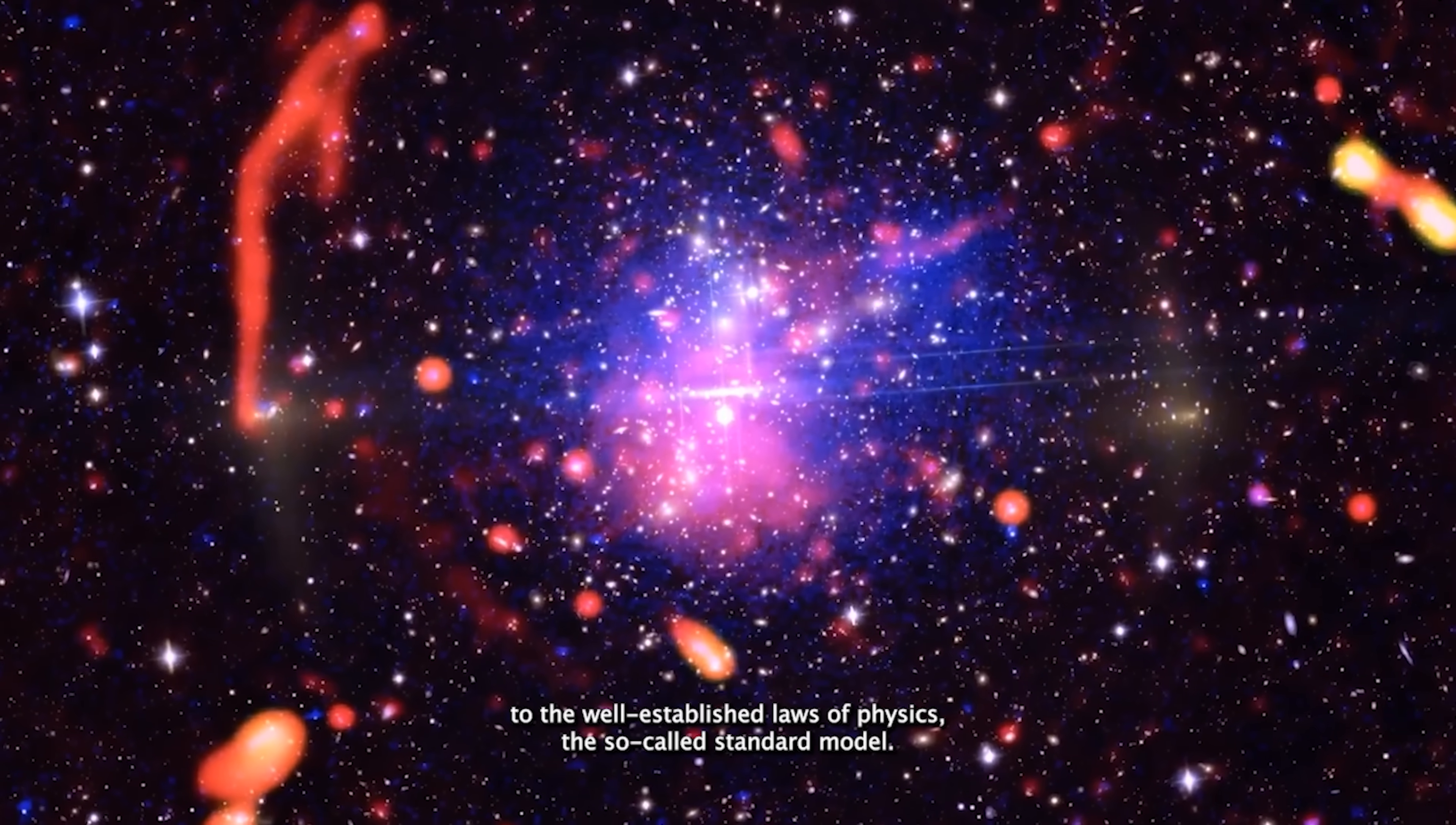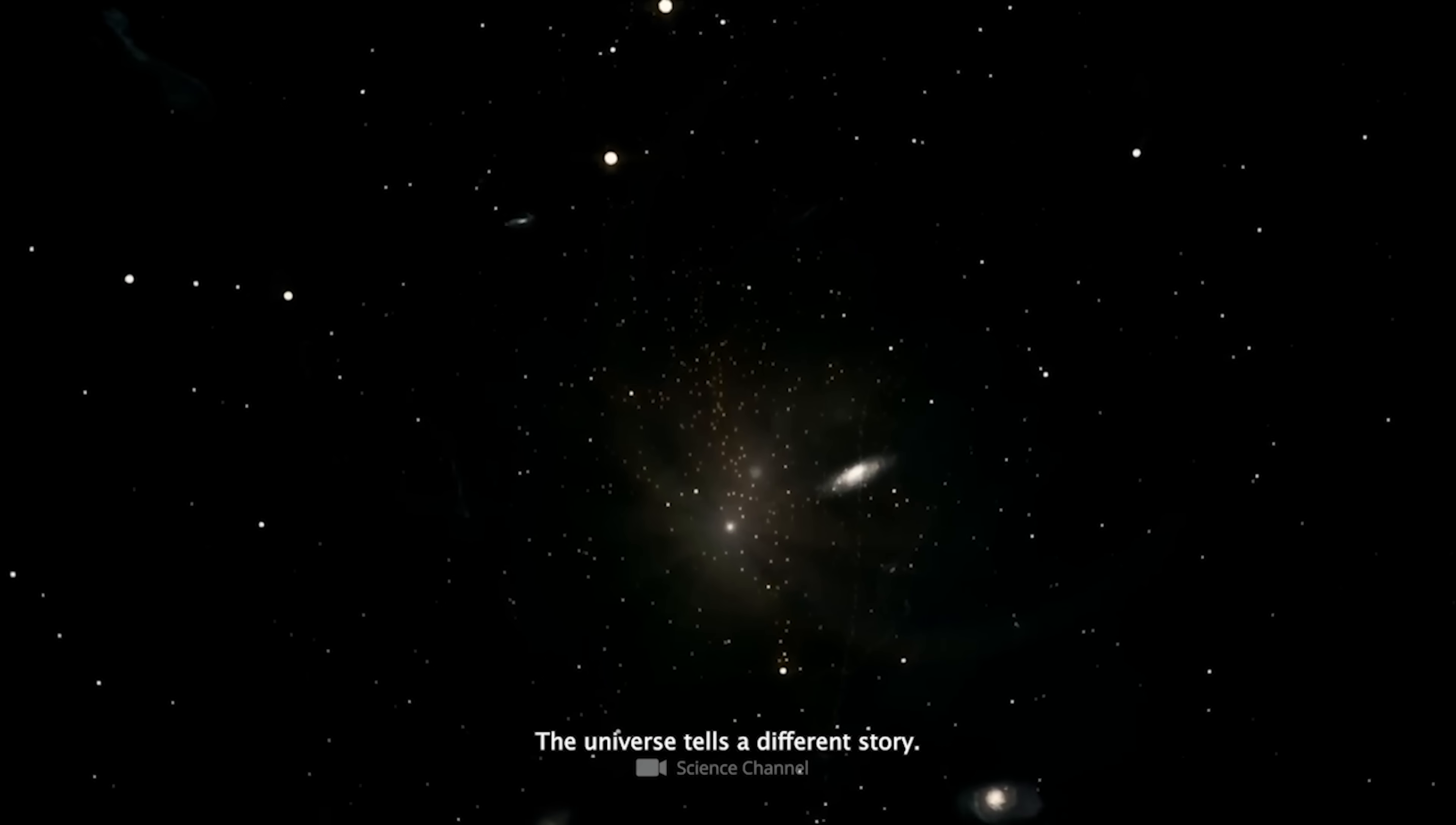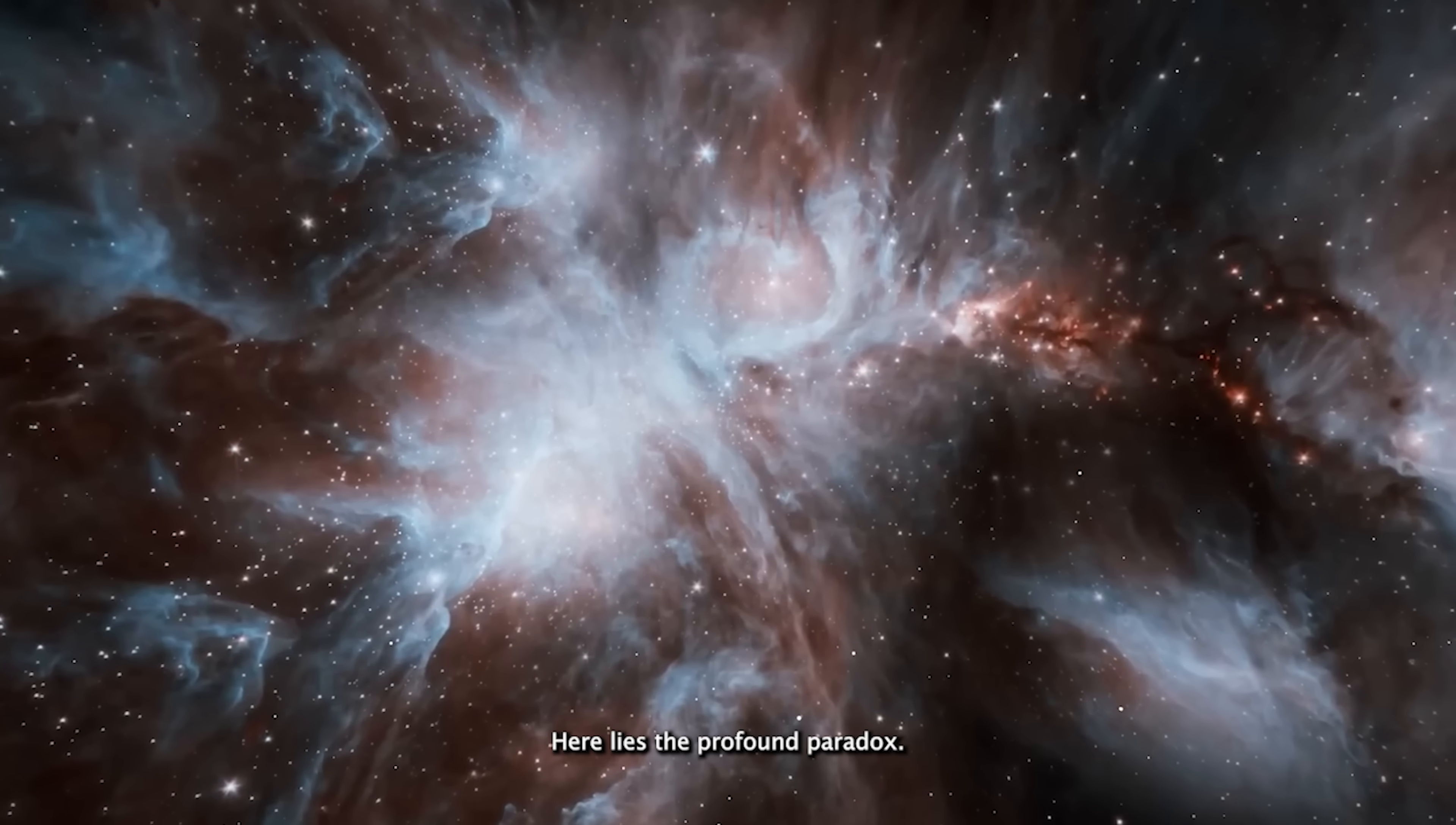According to the well-established laws of physics, the standard model, matter and antimatter should have been born in equal parts during the Big Bang. Logically, neither should have had the upper hand. But look around. The universe tells a different story. What we see is almost entirely matter. Antimatter is scarce, found mostly in controlled lab experiments or fleetingly among cosmic rays. No galaxy, no star, and no living creature you know is made of antimatter.